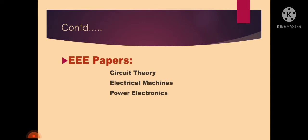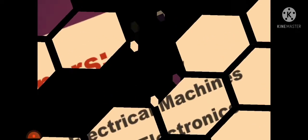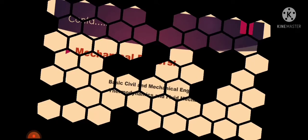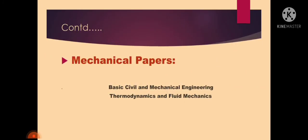They will also study mechanical papers such as Basic Civil and Mechanical Engineering, Thermodynamics, and Fluid Mechanics. An Instrumentation Engineer will be operating with machines, so they must gain basic knowledge about those machines. That's why they are studying these mechanical papers.